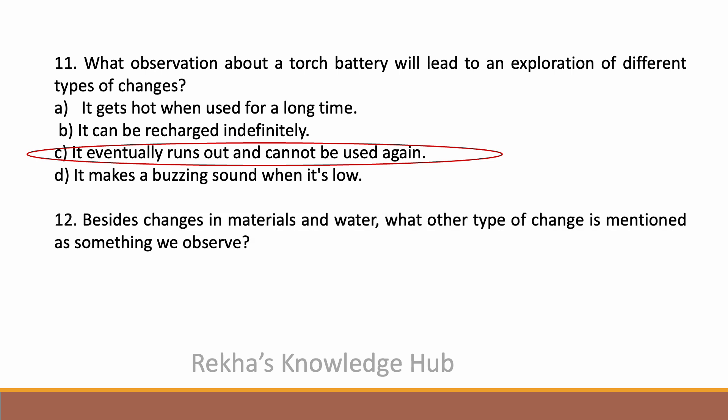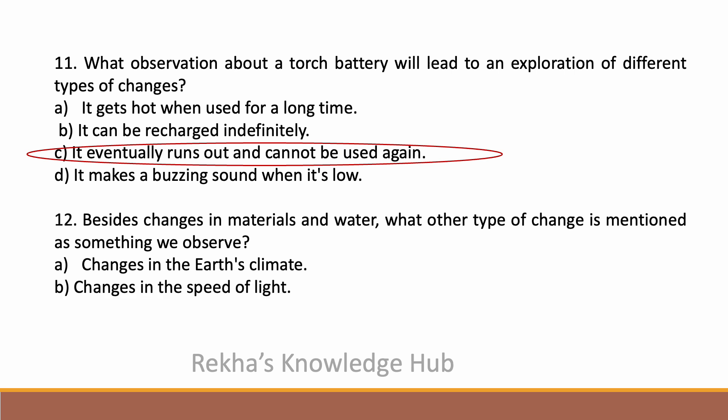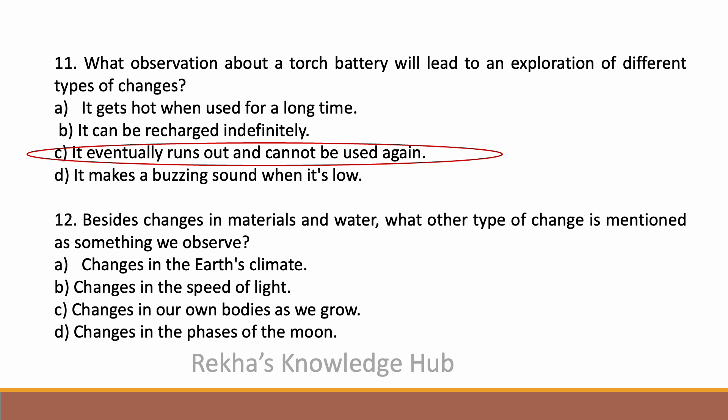Besides changes in materials and water, what other type of change is mentioned as something we observe? Options are: changes in the earth's climate, changes in the speed of light, changes in our own bodies as we grow, or changes in the phases of the moon. The correct answer is: changes in our own bodies as we grow.